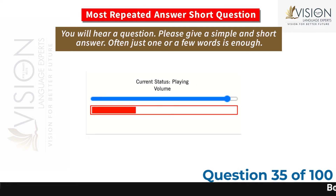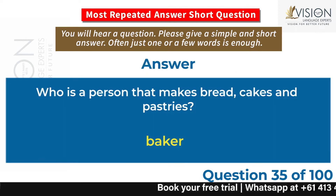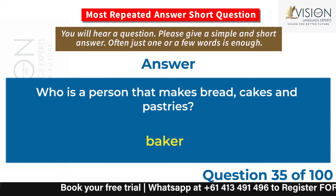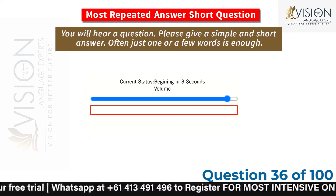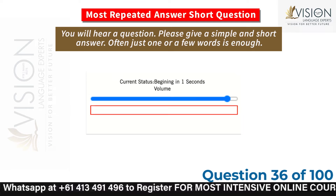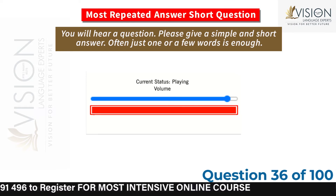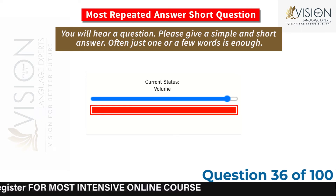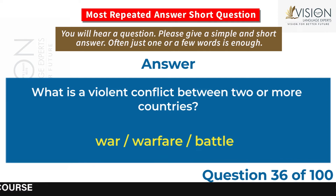Who is a person that makes bread, cakes and pastries? Baker. What is a violent conflict between two or more countries? War, warfare, battle.